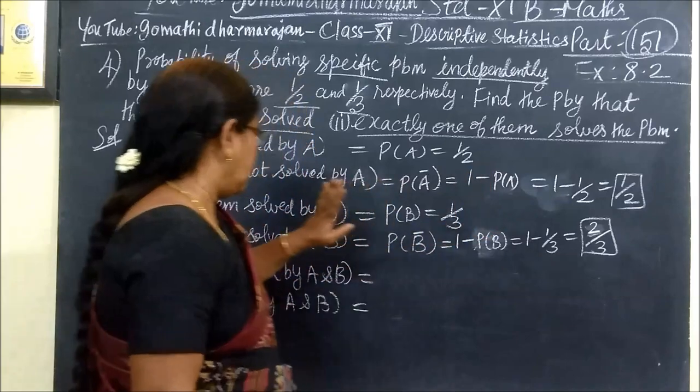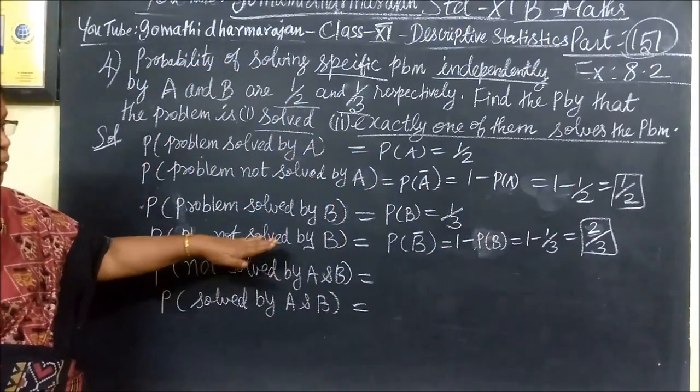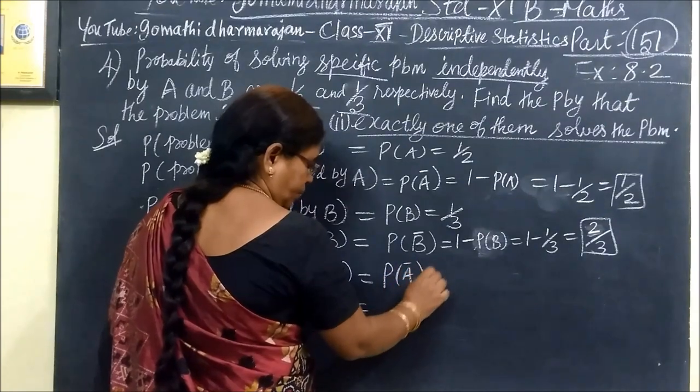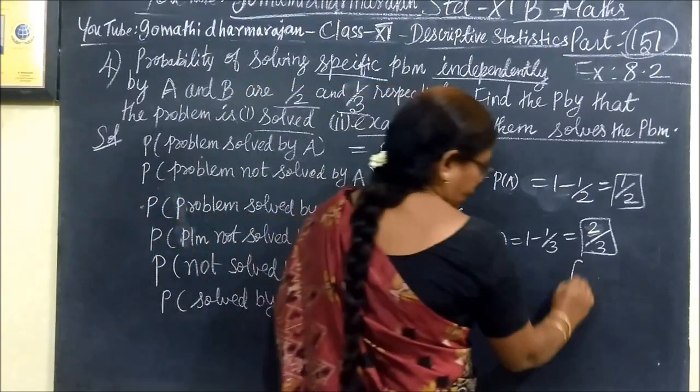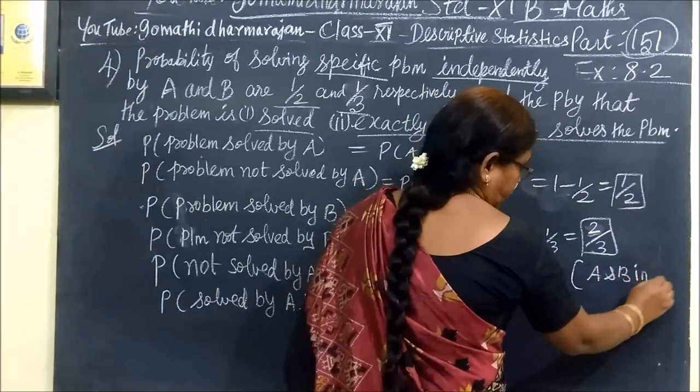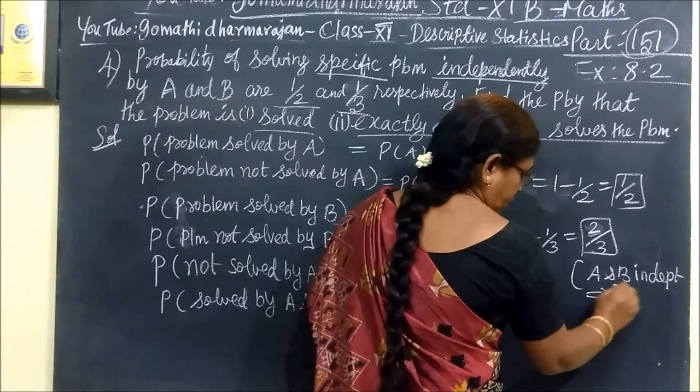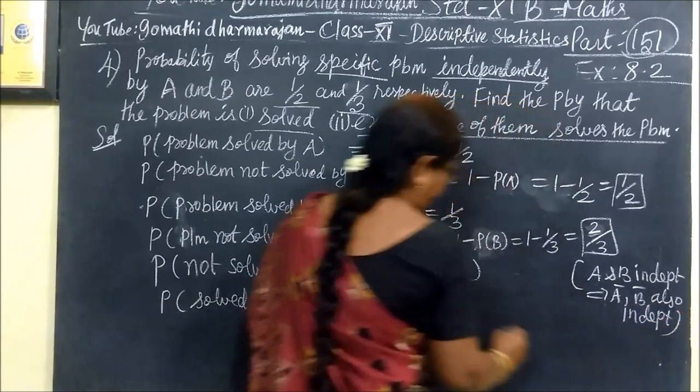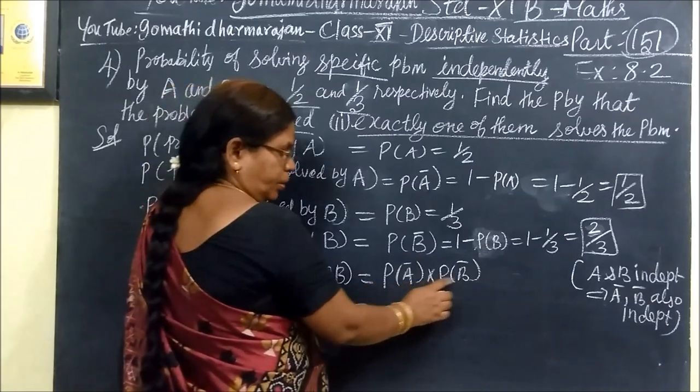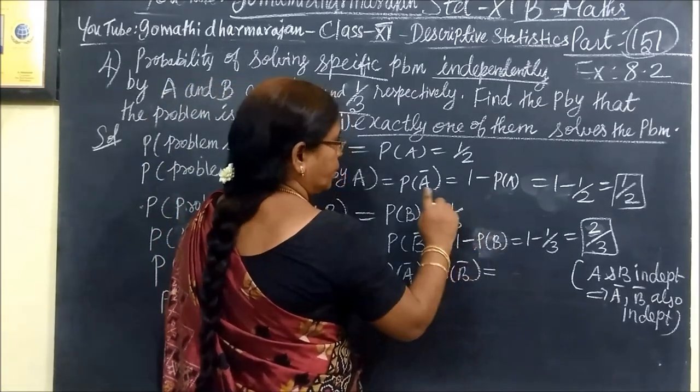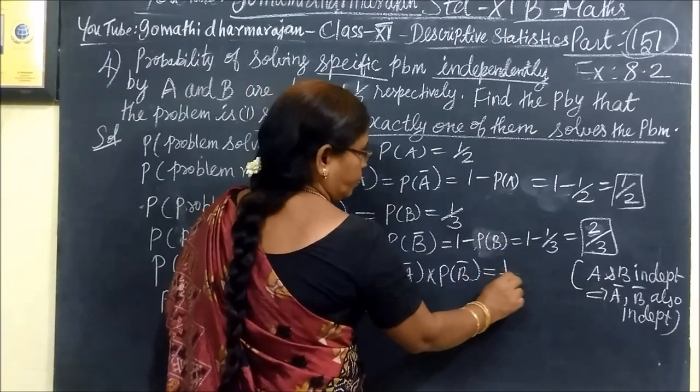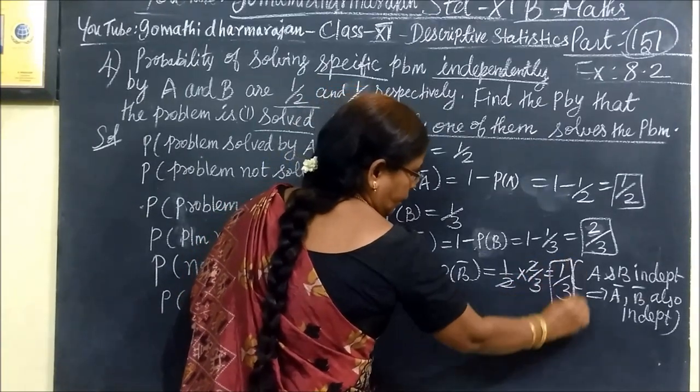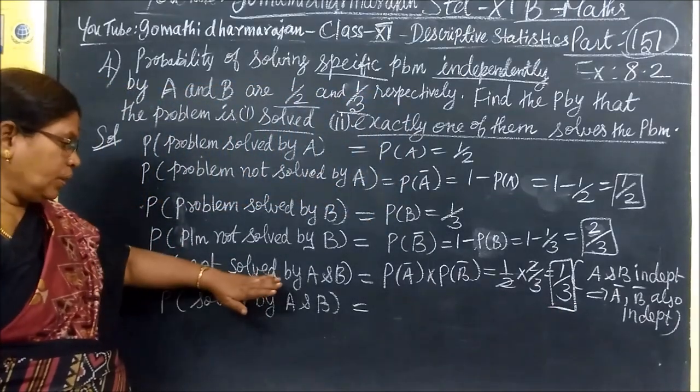It is not solved by B, not solved by both A and B. P(A bar) into P(B bar), because A and B are independent, which implies A bar and B bar are also independent. Independent is formed. P of A intersection B equal to P of A bar into P of B bar. This is A bar 1/2, B bar 2/3. This is 1/3. This is not solved.